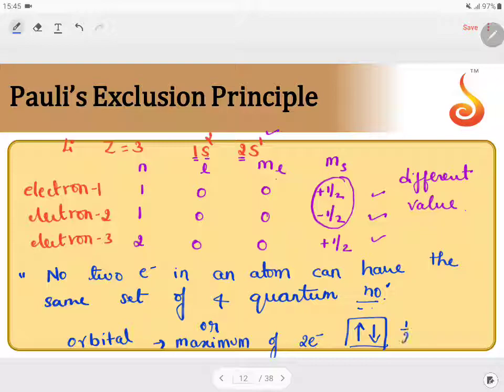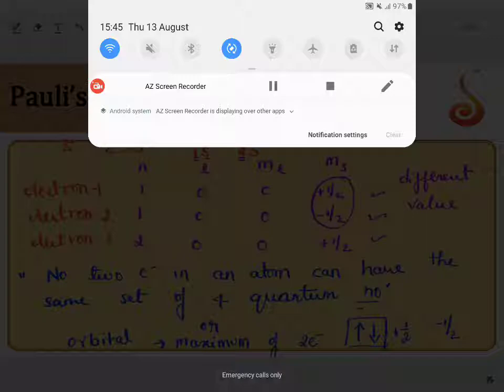When I say opposite spin, if one of them has plus half, the other should have minus half. Then only you can fill two electrons in an orbital. You cannot write three electrons, four electrons, or something like that. In an orbital, maximum is only two. That's known as Pauli's Exclusion Principle.